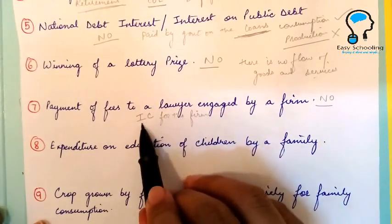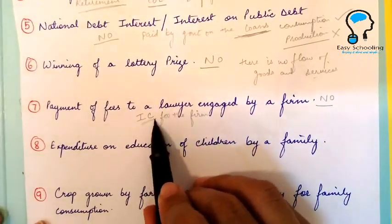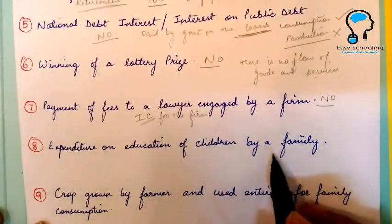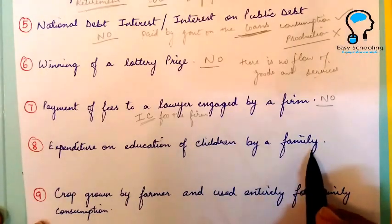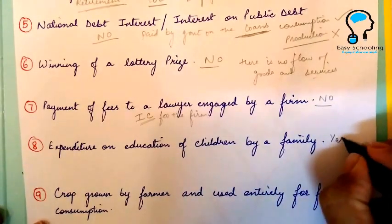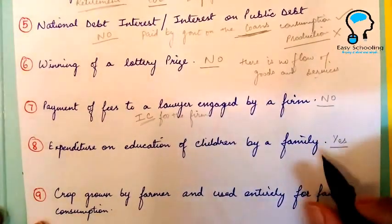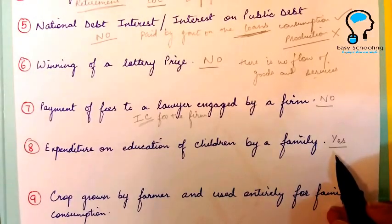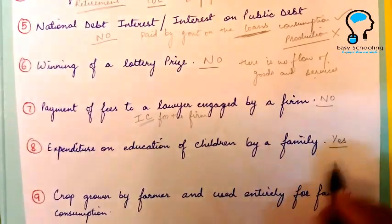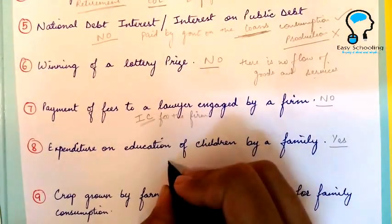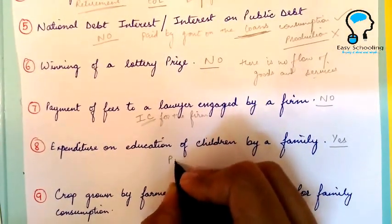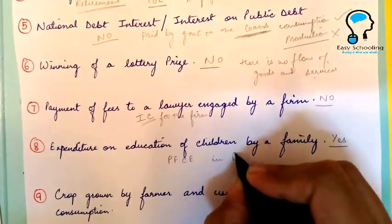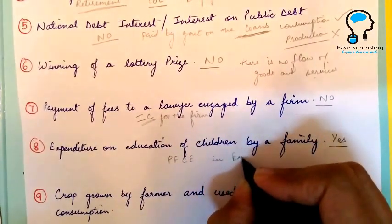Expenditure on education of children by a family — yes, this will be included in national income under the heading private final consumption expenditure in the expenditure method.